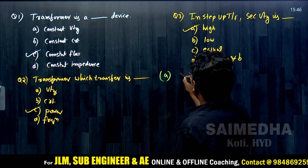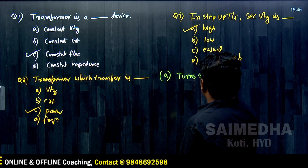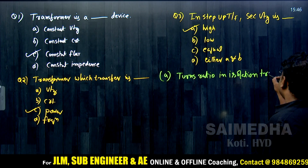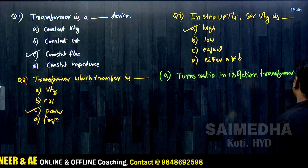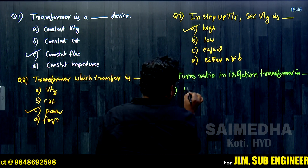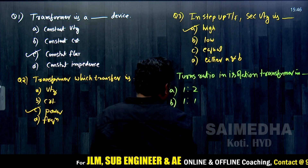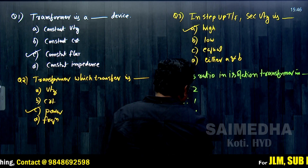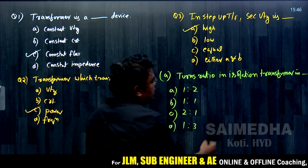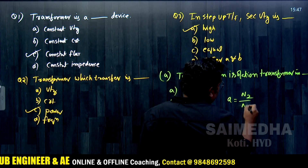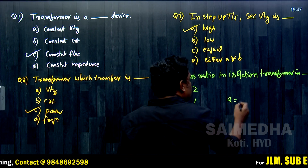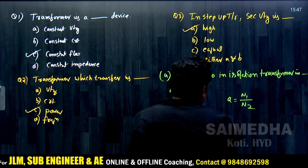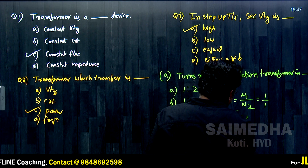Question 4: In an isolation transformer, the turns ratio is dash. Options: (a) 1:2, (b) 1:1, (c) 2:1, (d) 1:3. The turns ratio is N1 divided by N2. For an isolation transformer, this equals 1 by 1, so the turns ratio is 1:1. Option B is correct.